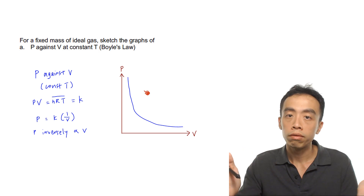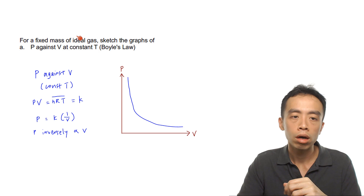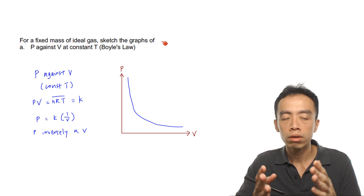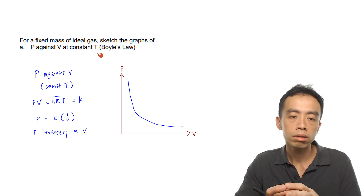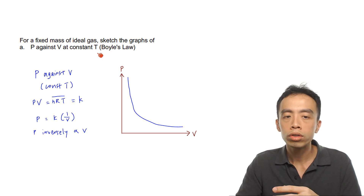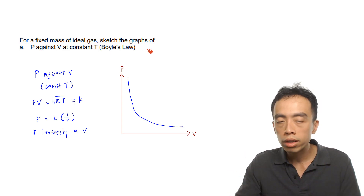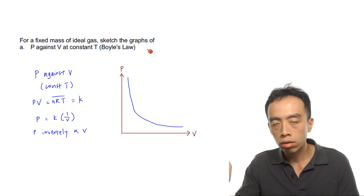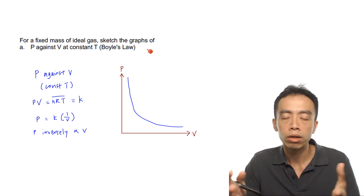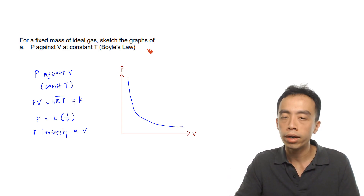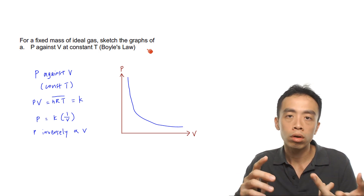We'll have examples all at constant temperature. For a fixed mass of an ideal gas, part A asks us to sketch the graph of pressure against volume at constant temperature. This is Boyle's law. We don't need to memorize Boyle's law and Charles' law independently — they are all combined into the ideal gas equation PV equals nRT.